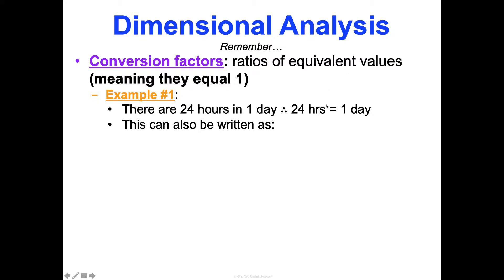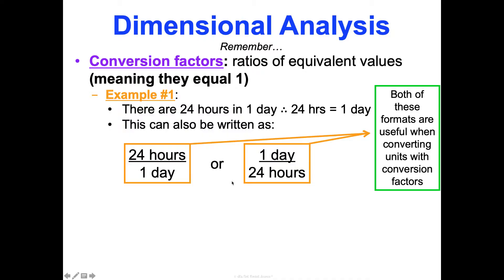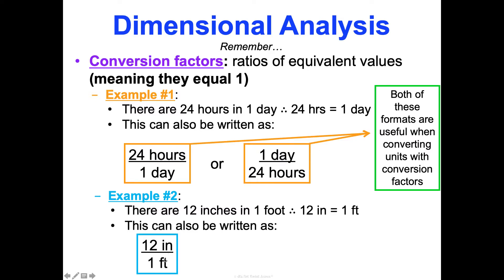Because of this, we can write this as a fraction. We could write it as 24 hours divided by one day, or one day divided by 24 hours. Both formats mean the same thing and are both useful when converting units. For example, there are 12 inches in one foot. So we could write it as 12 inches over one foot, or one foot over 12 inches. Both equal one — they're ratios of equivalent values.